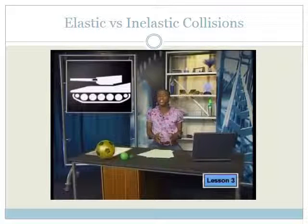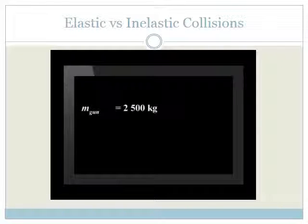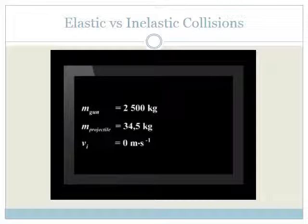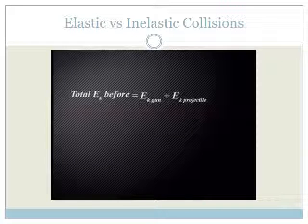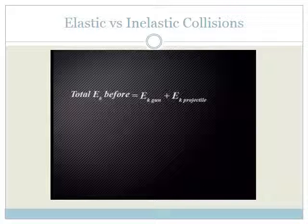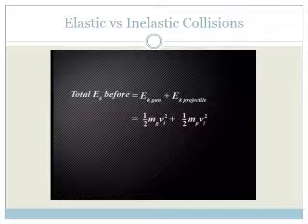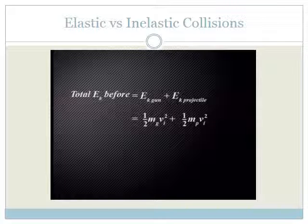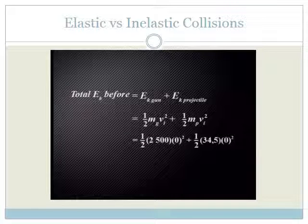Let's calculate the kinetic energy of the gun and projectile before the explosion. The mass of the gun is 2,500 kilograms. The mass of the projectile is 34.5 kilograms. The initial velocity of the projectile and gun is zero meters per second as they are both stationary. The total kinetic energy of the system before the explosion equals the initial kinetic energy of the gun plus the initial kinetic energy of the projectile.